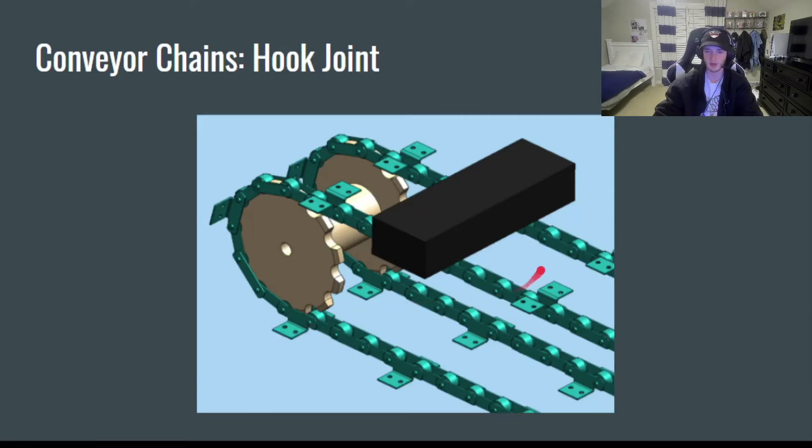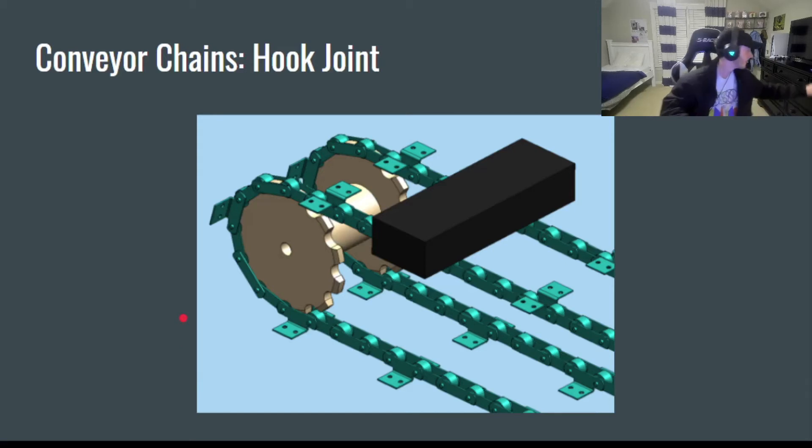And on the last type of chain here, we got another conveyor chain. It's the hook joint or the detachable chain. These chains are used when the length between sprockets is fairly short. They're convenient because they're much easier to detach and reattach than other chains.